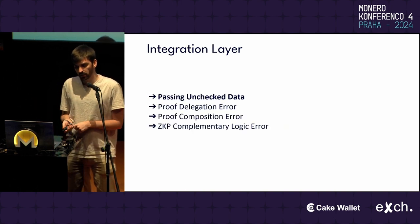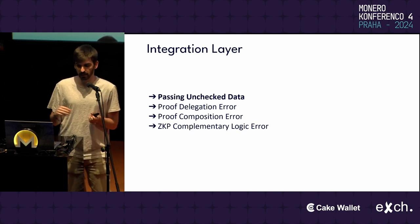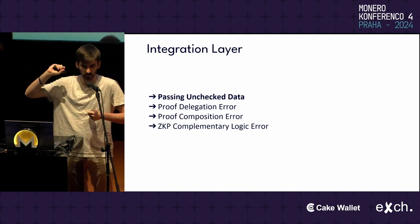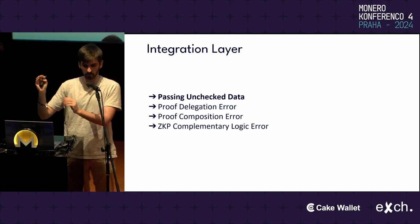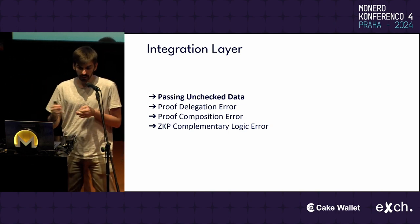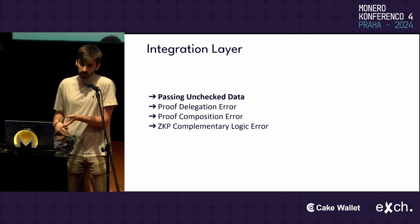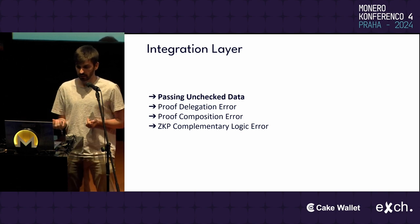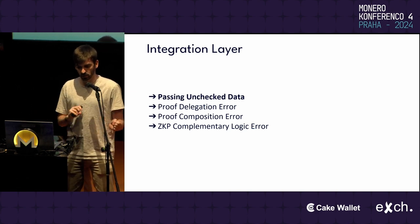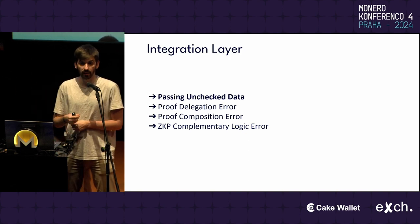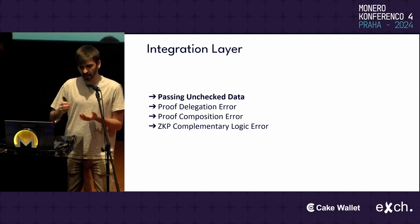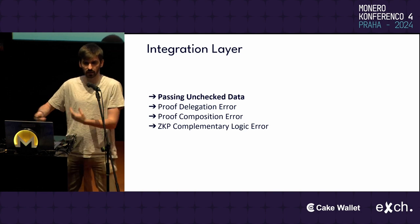On the integration layer, four main things could go wrong. First is passing unchecked data to the circuit — circuits often have assumptions that inputs have specific values or are within a specific range, and it is the integration layer's responsibility to check those assumptions, which people sometimes forget. We also have proof delegation and proof composition errors related to how the prover is used, and some privacy-related applications have complementary logic to the ZKP that can introduce common vulnerabilities.